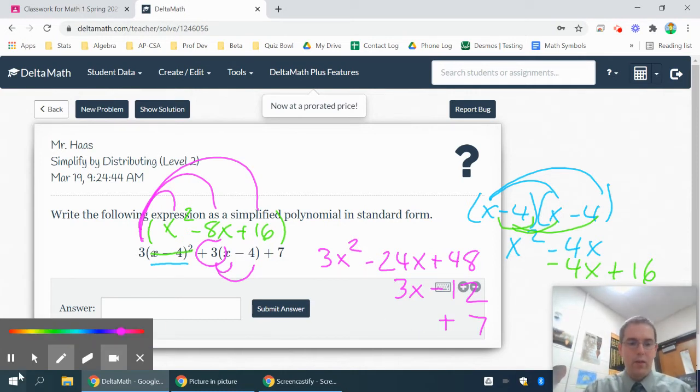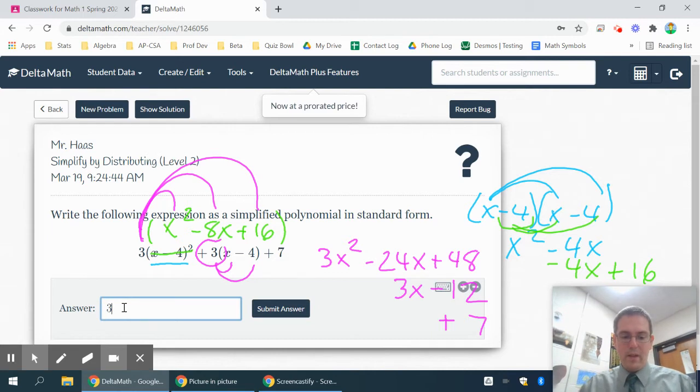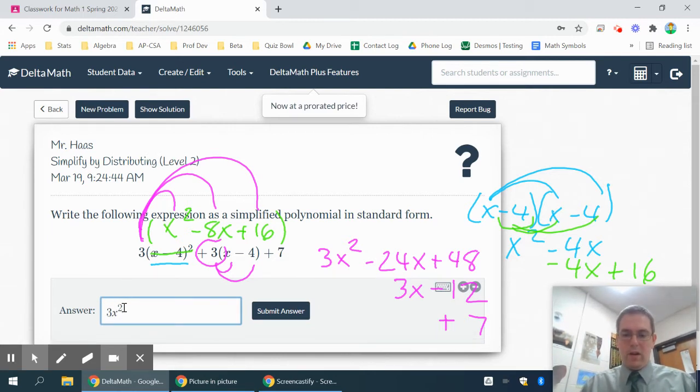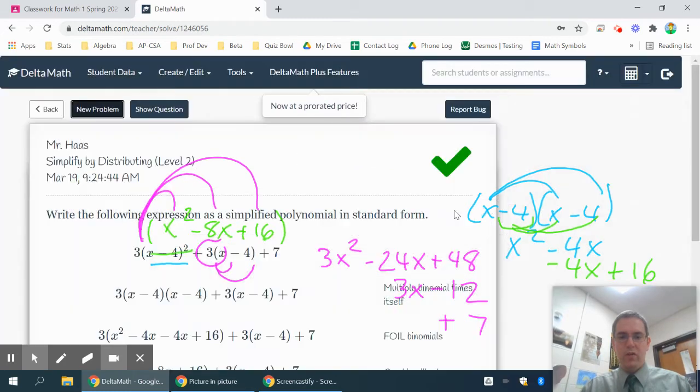So once I combine all those like terms together, and I like to write them so they do line up, that will give me 3x squared minus 21x. And then 48 minus 12 is 36 plus 7 would be 43. So that gives you the idea of what you have going on there.